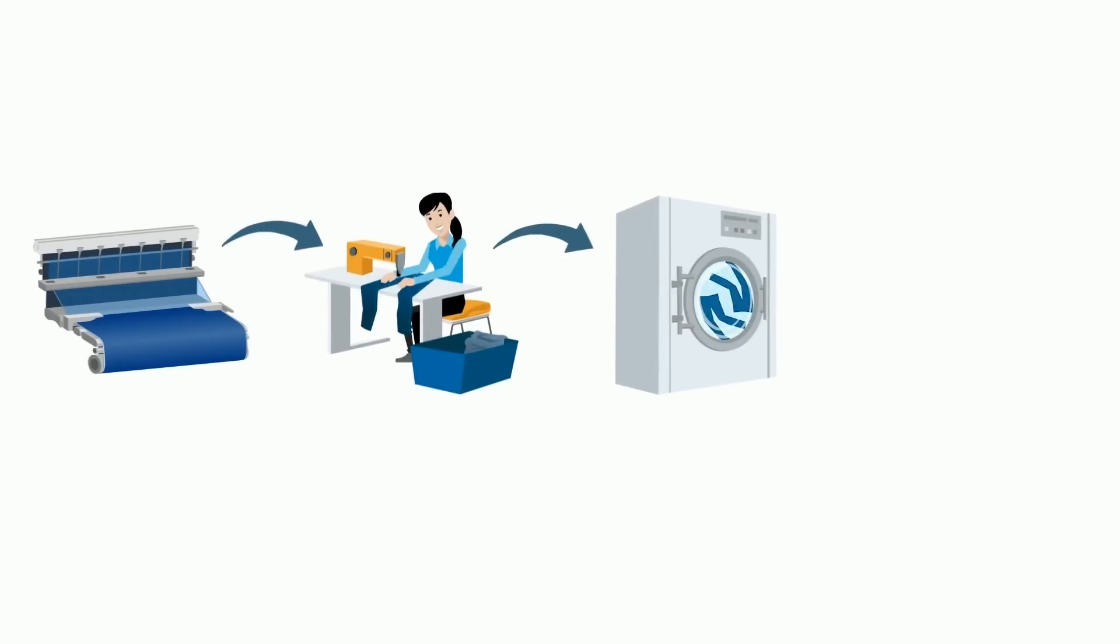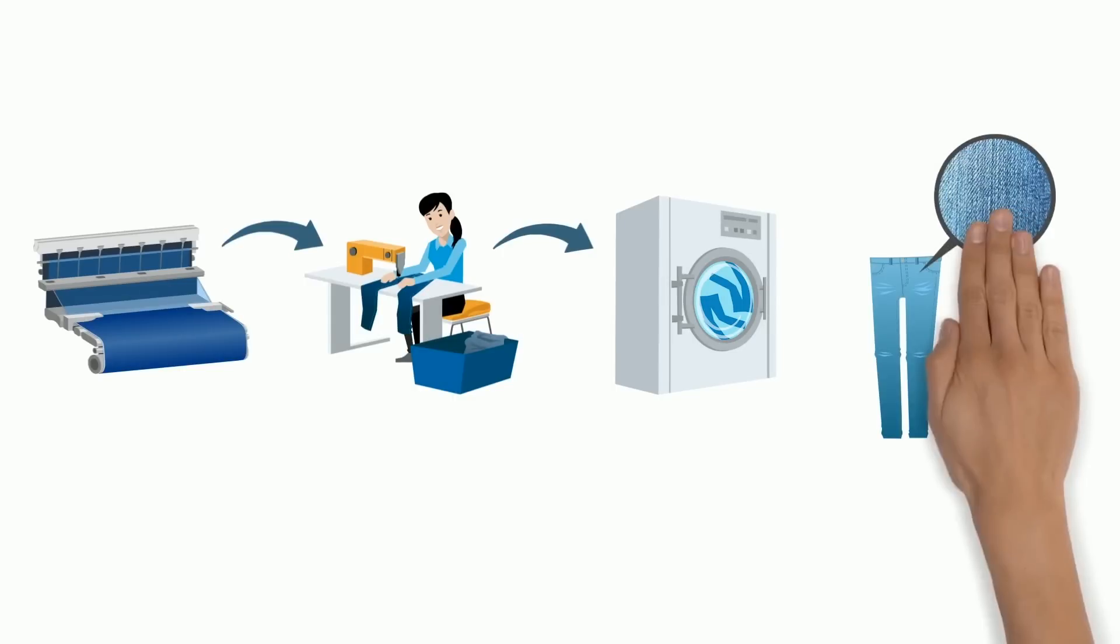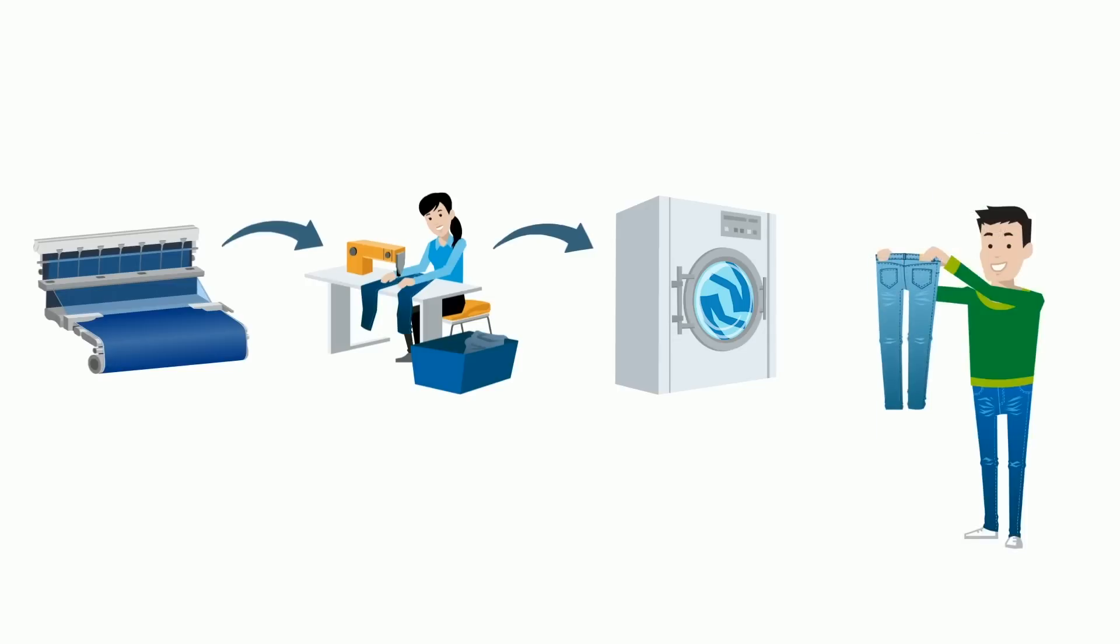The indigo yarn is then woven, made into jeans, and laundered. When some of the indigo layers get washed out, it gives denim its individual look, which is why some people feel that their vintage jeans look unique.